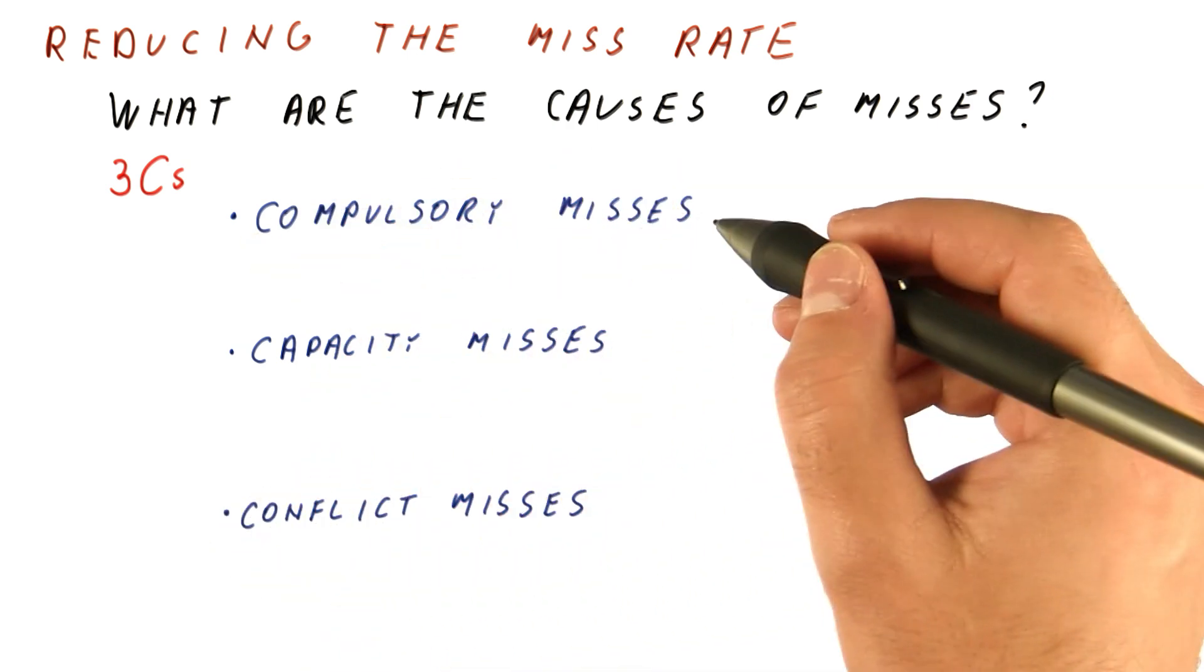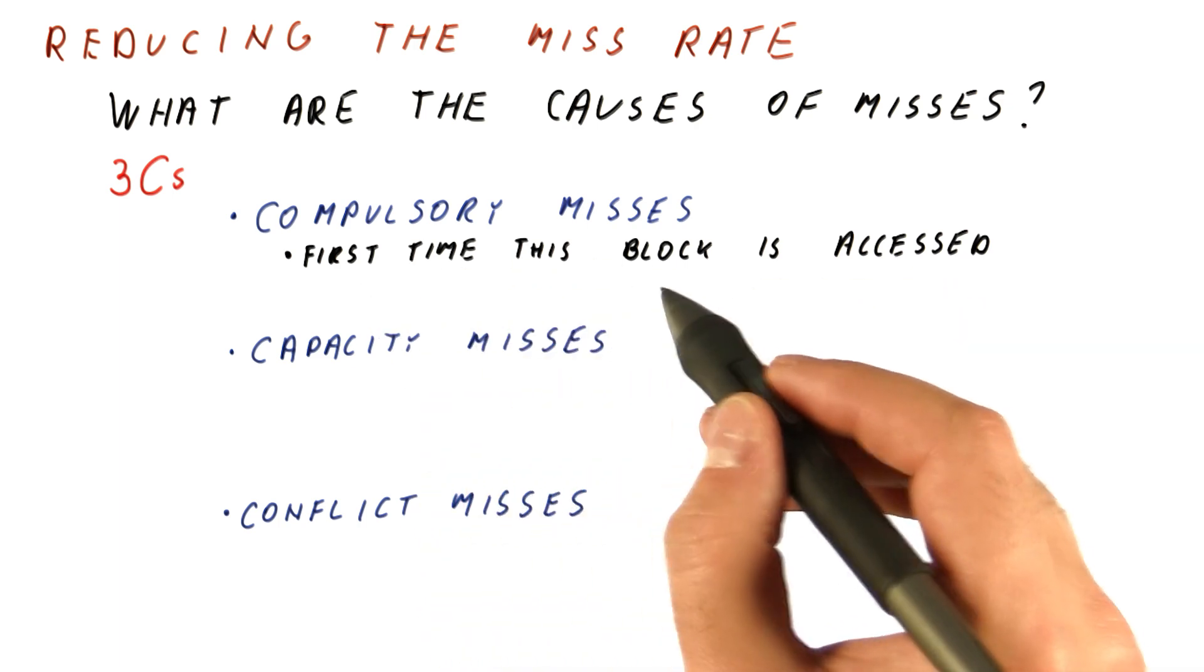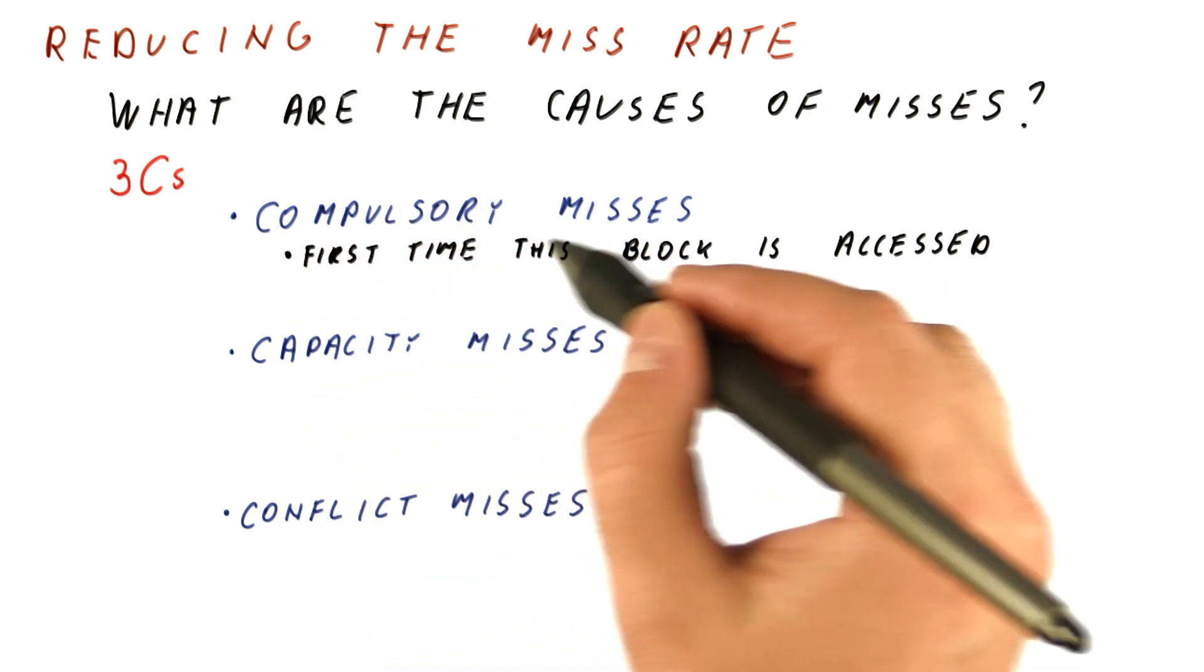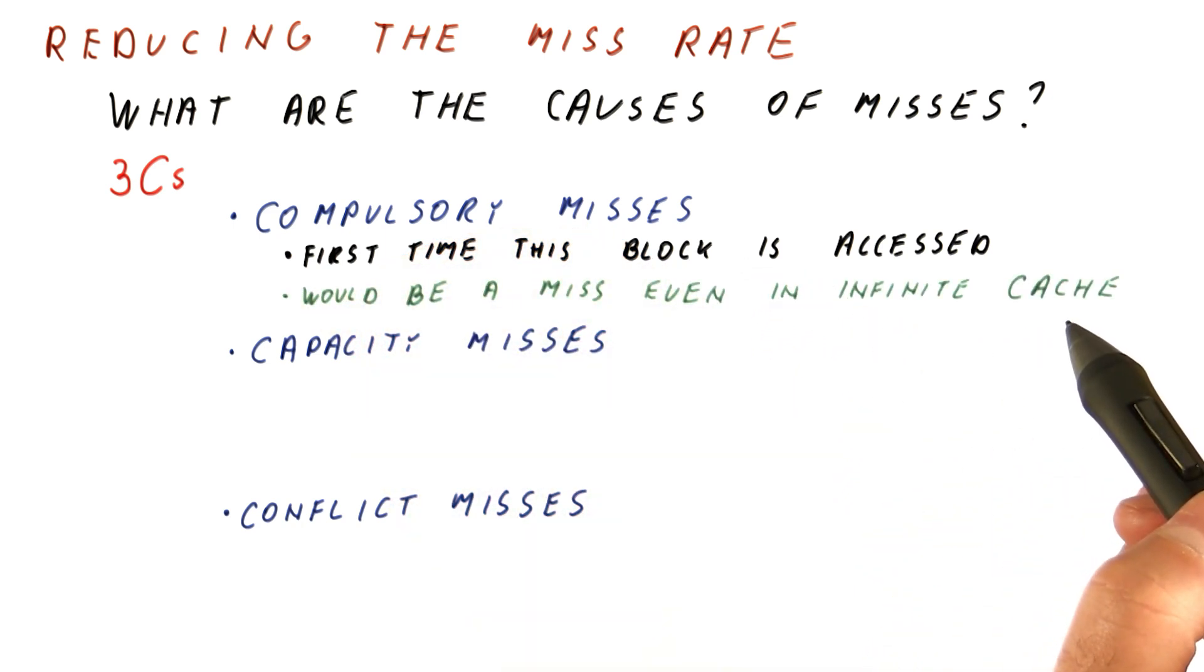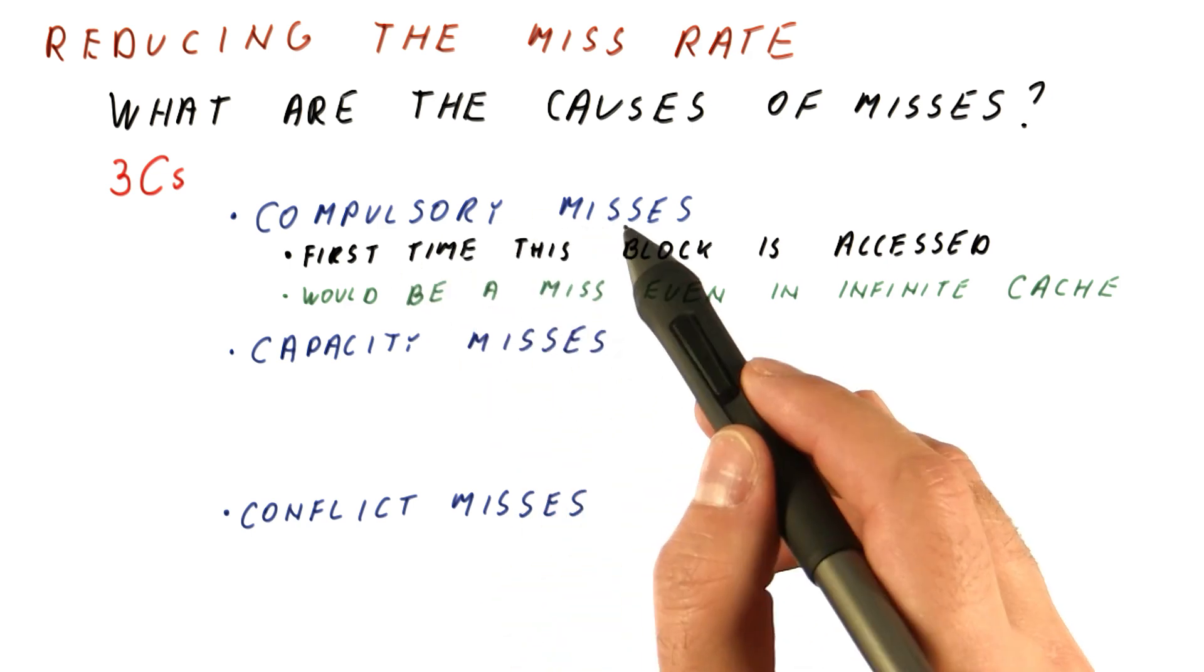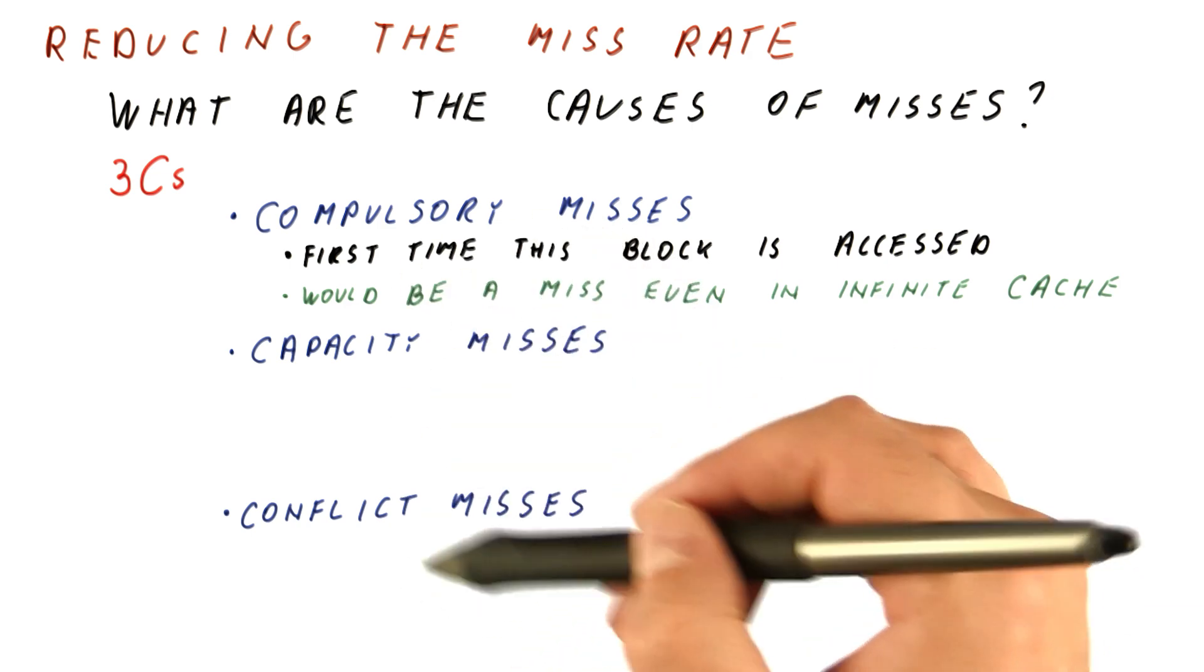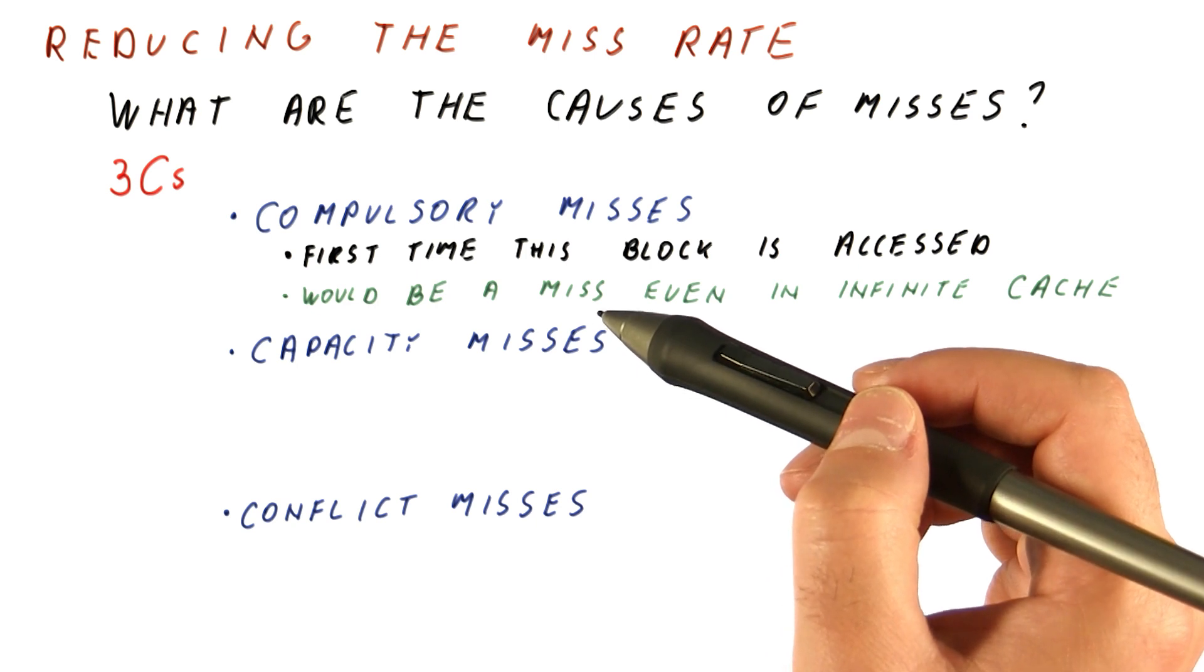A compulsory miss is a miss that occurs when a block is accessed for the first time. It's called compulsory because you have to have this miss. Even if we have an infinite cache that starts out empty, we would still have the compulsory misses, but we would not have any of the other two kinds. A compulsory miss is a miss you have to have simply because for the first time you have to bring a block into the cache.